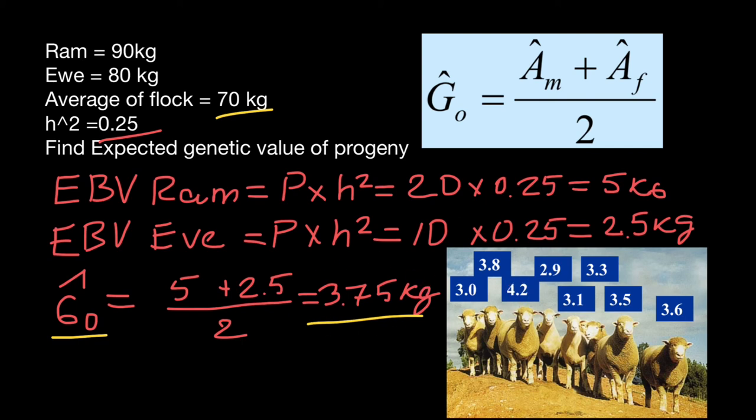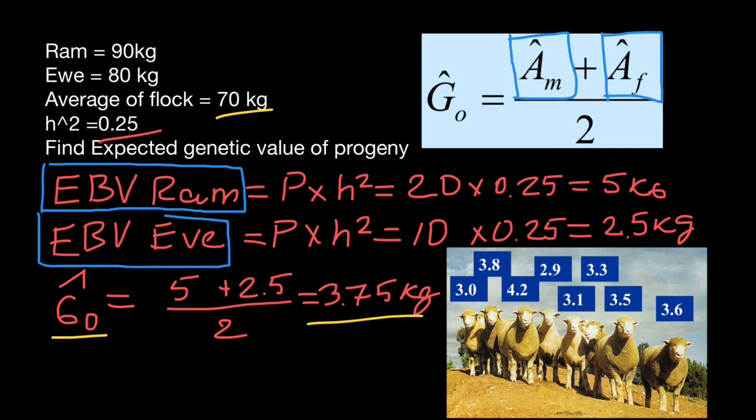One more note. This part of the formula is the same as this part. So estimated breeding value of male parent. And this abbreviation is the same as estimated breeding value of ewe.